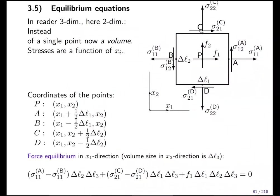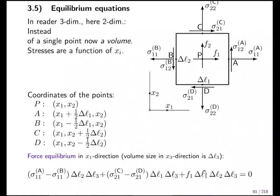We are not finished yet in the 1-direction. The upper and lower faces also carry shear stresses that contribute to the force in the 1-direction. σ₂₁ multiplied by the area of the upper surface Δl1 × Δl3 gives the force pointing to the right. σ₂₁ on the lower face multiplied by the area gives the force pointing to the left. We also have the body force f1 per volume, multiplied by the whole volume of the cube to get the total body force.